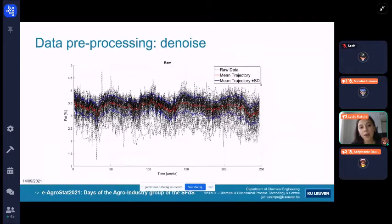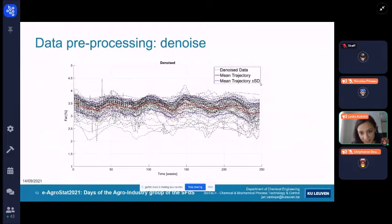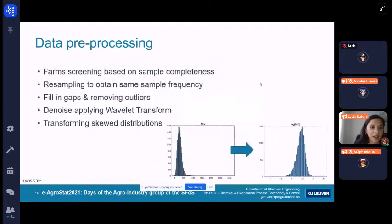For this reason, we applied the wavelet transformation. And this is the result after denoising the data. As you can see, we have a better smooth line that is demonstrating seasonality better. And finally, we needed to transform the skewed distributions, like, for example, applying logarithmic transformations.